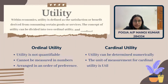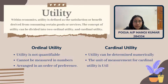Within economics, utility is defined as the satisfaction or benefit derived from consuming certain goods or services. The concept of utility can be divided into two types: ordinal utility and cardinal utility. Ordinal utility is the belief that utility is not quantifiable and cannot be measured in numbers, but is rather arranged in an order of preference. Cardinal utility states that utility can in fact be determined numerically, with the unit of measurement being the util.